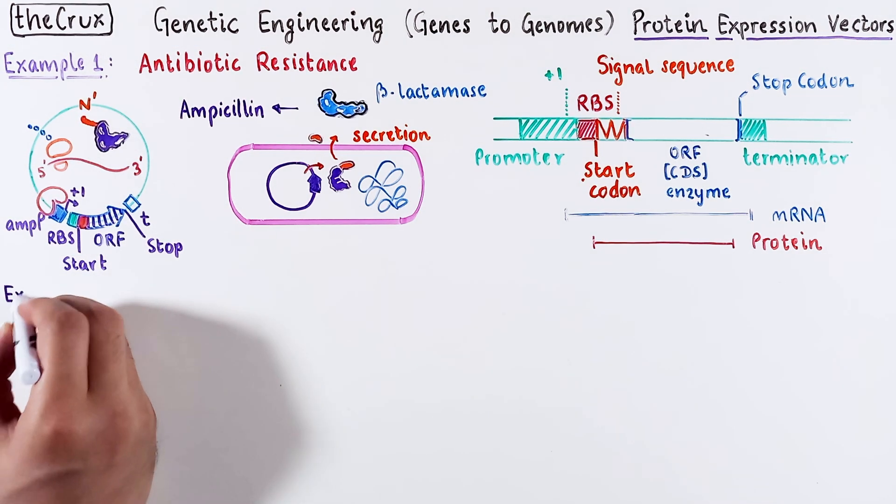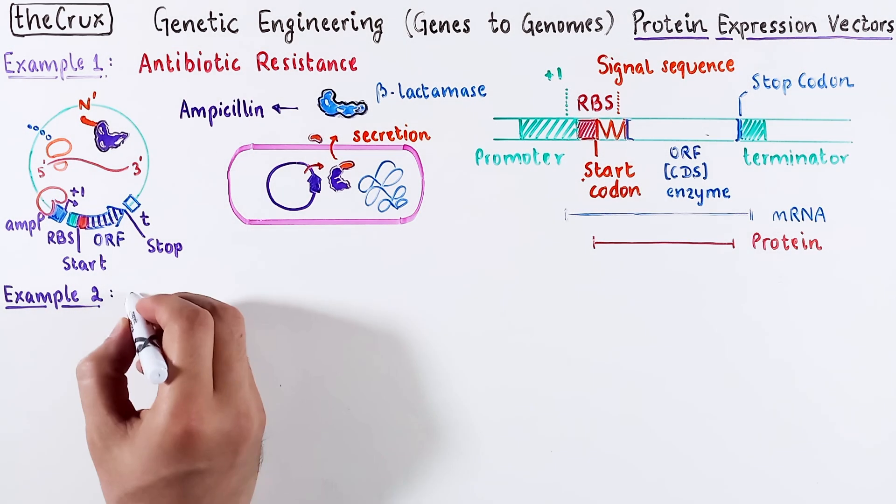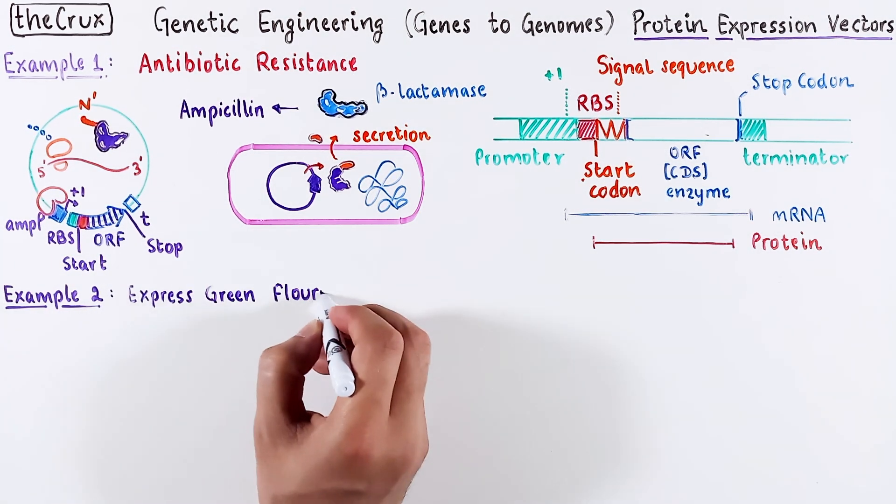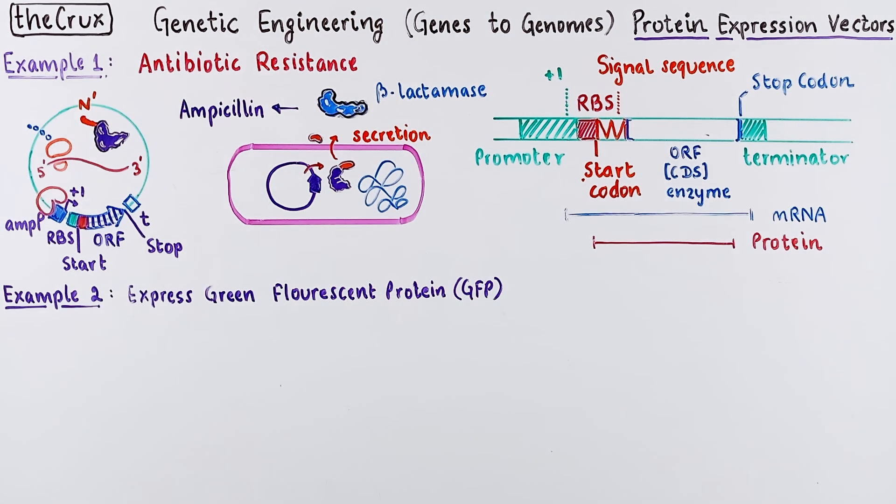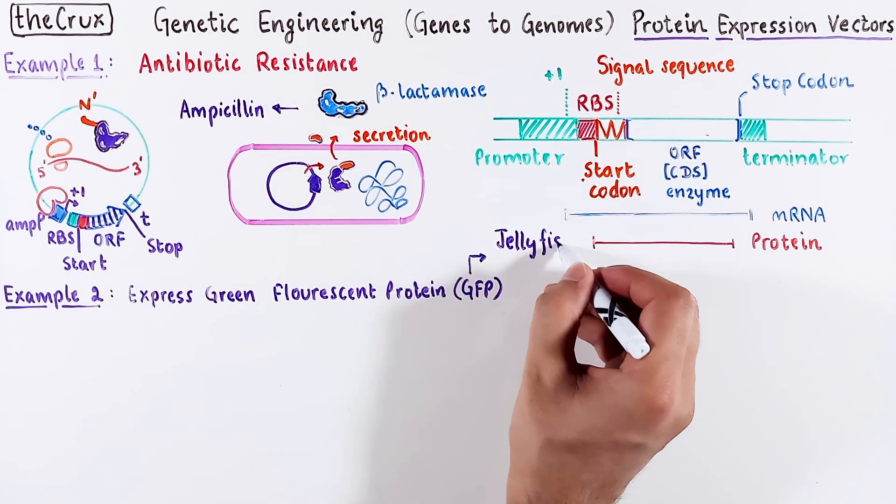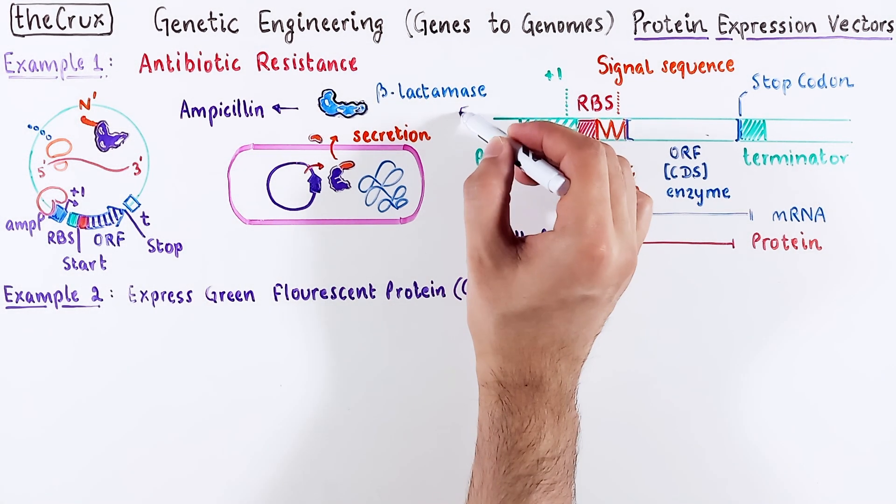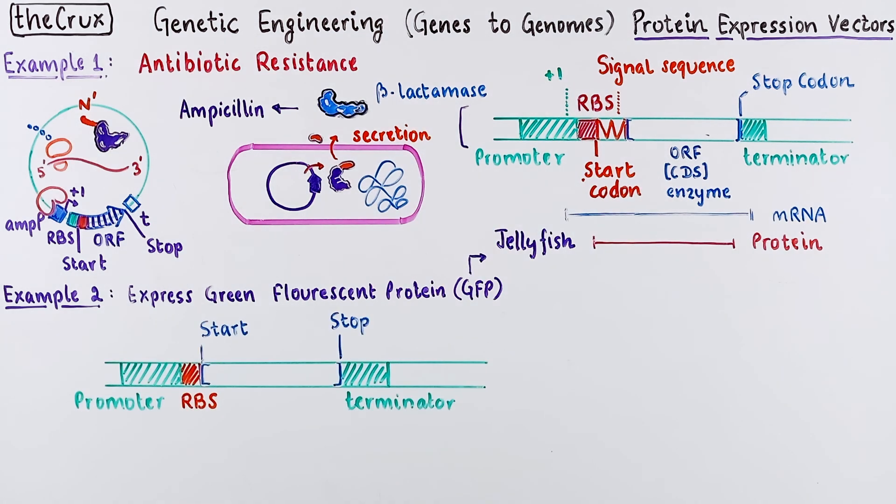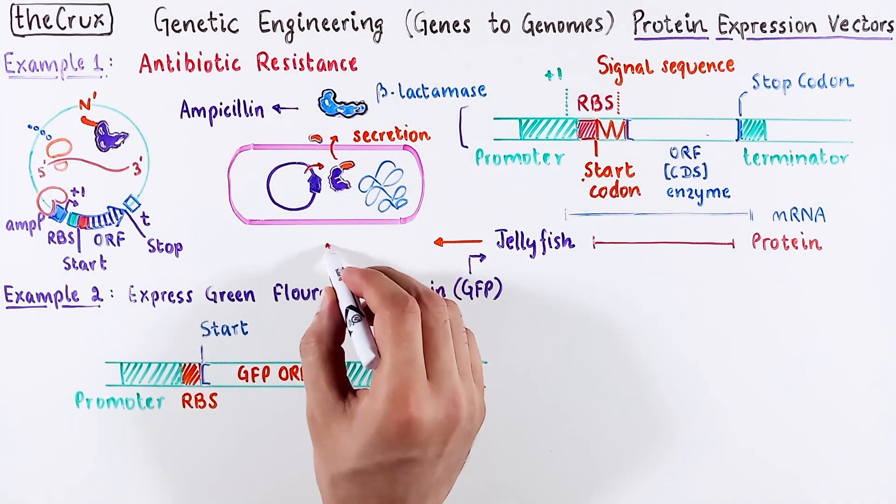Example 2 is a step up. Now you want to express a green fluorescent protein in bacteria. The template for GFP comes from jellyfish. The vector structure for expressing GFP looks something like this. Now how would you get the coding sequence for GFP? We discussed this in the last video.